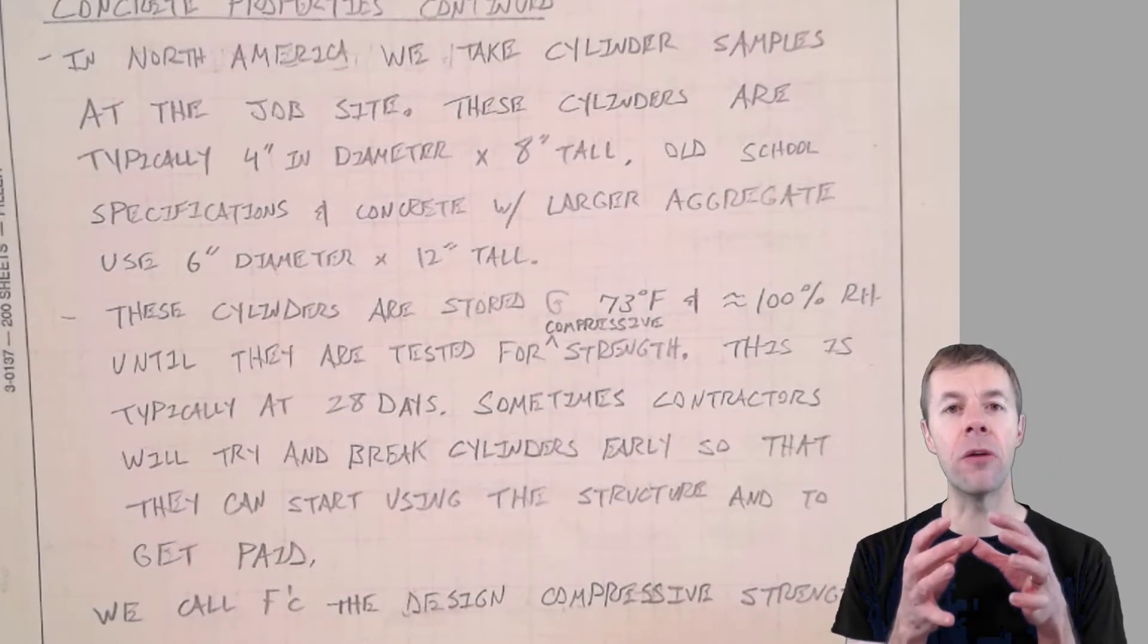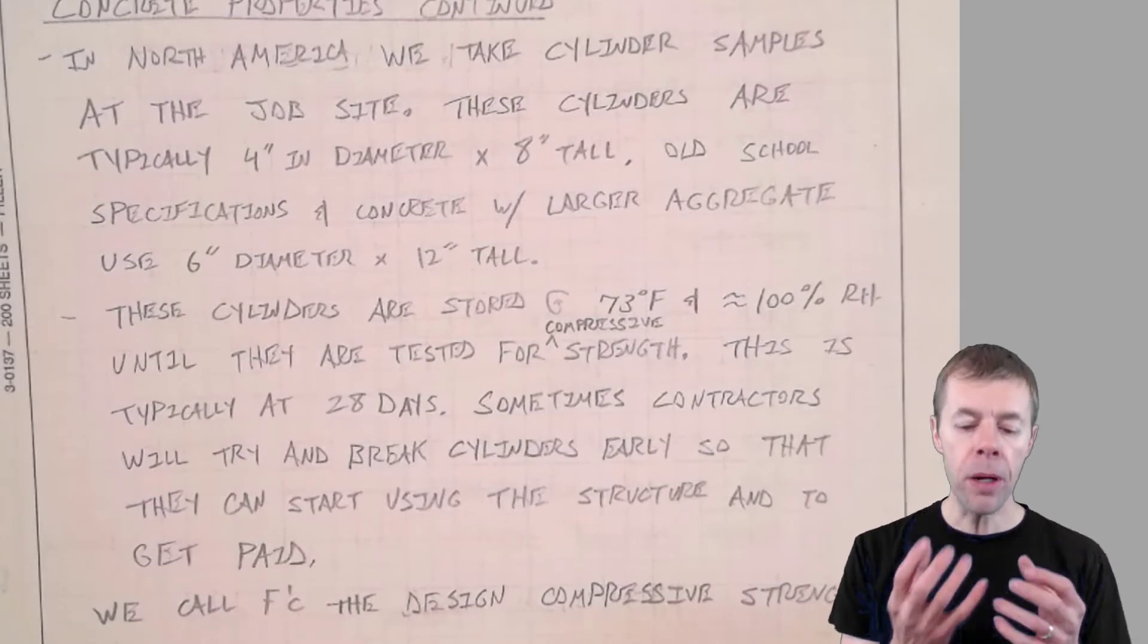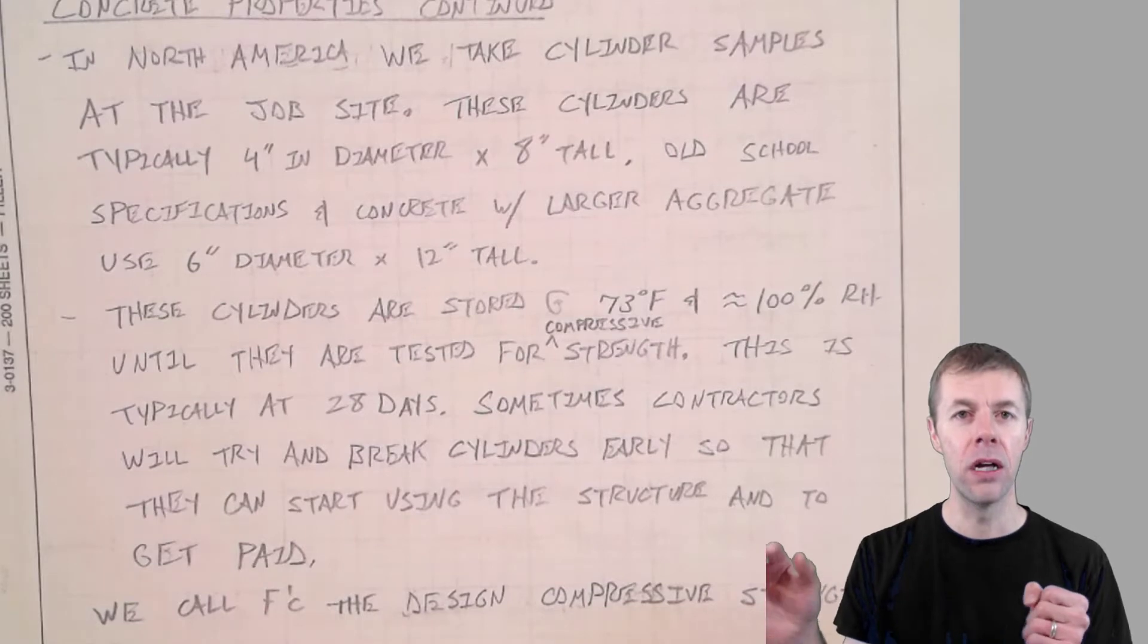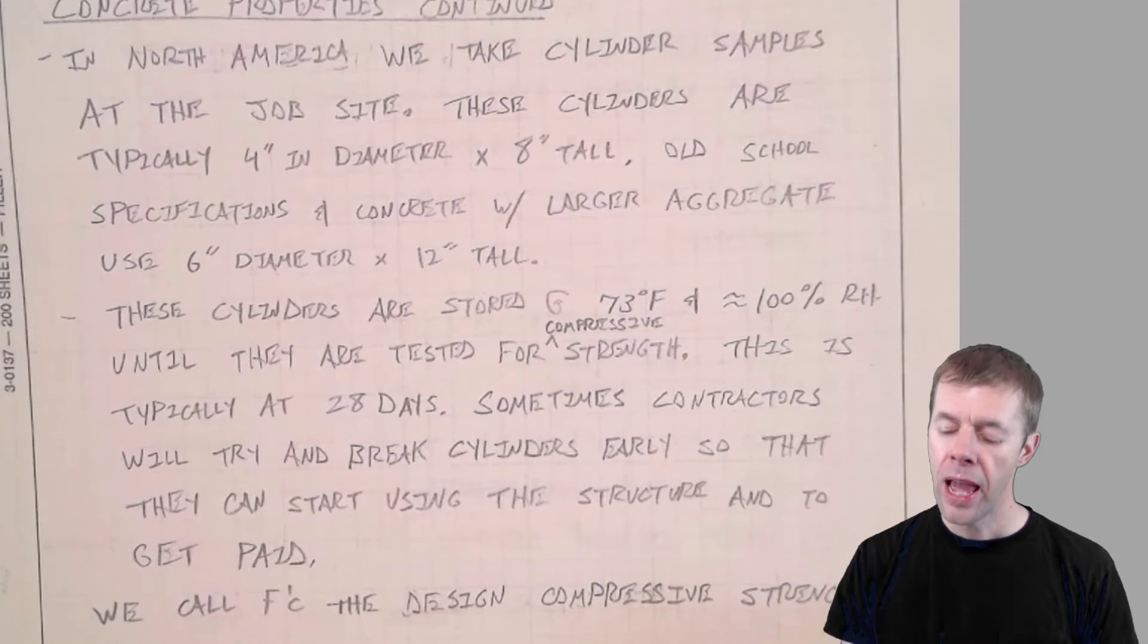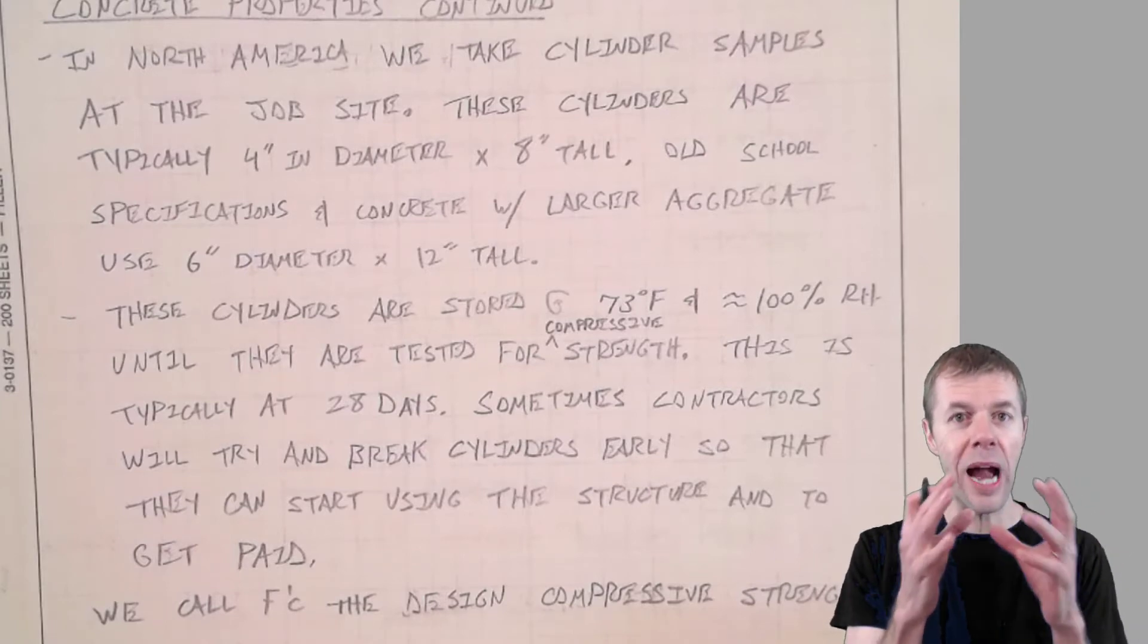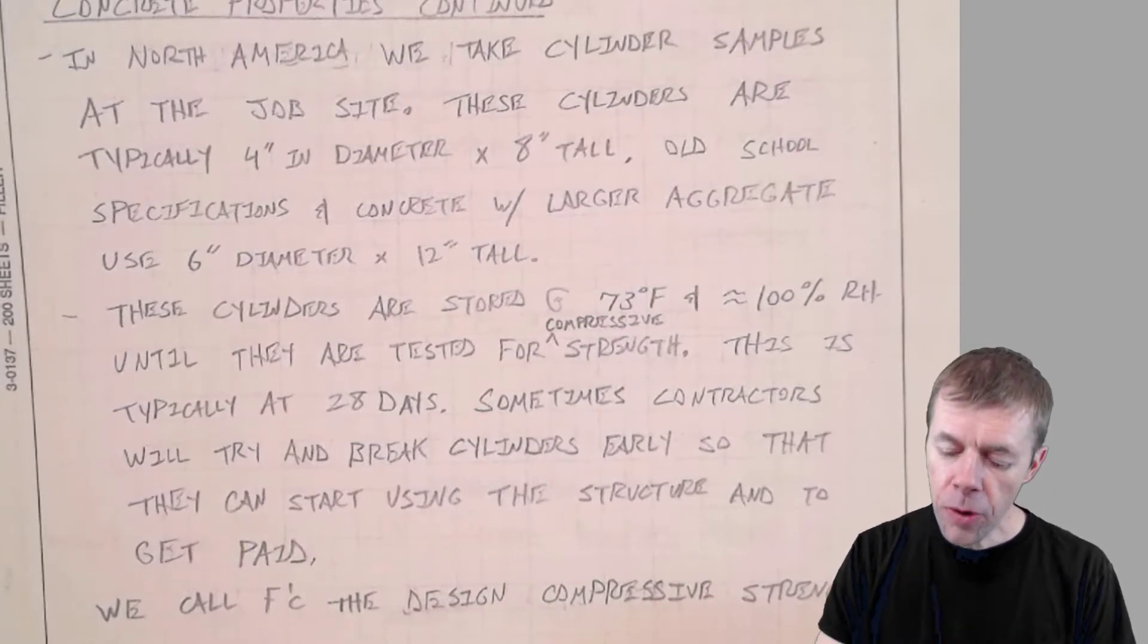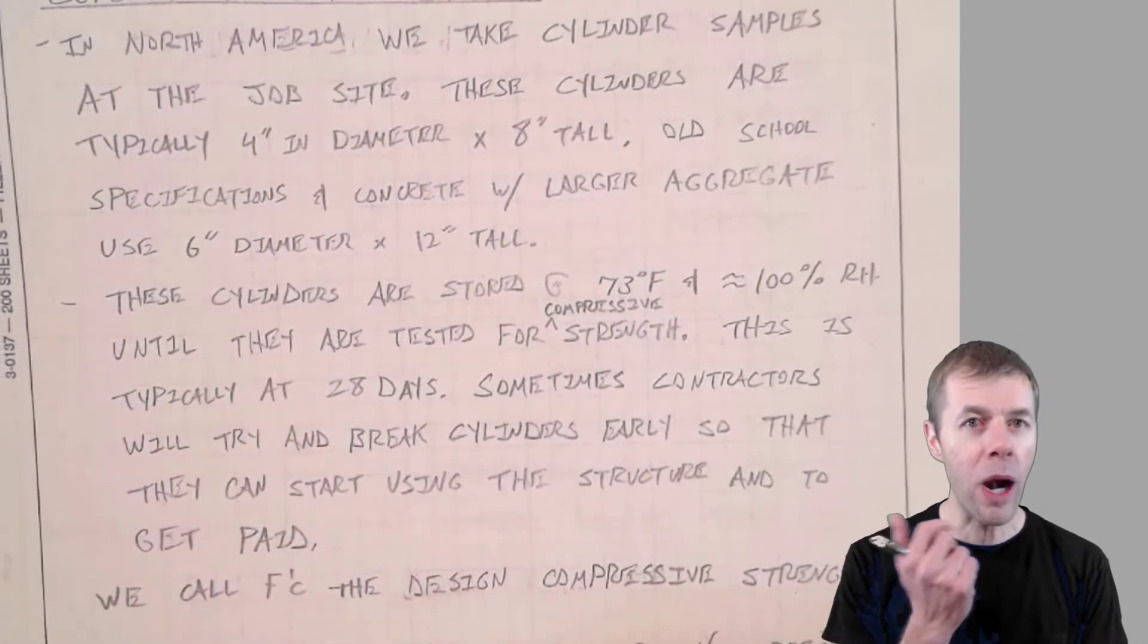Why am I taking this little bitty piece of concrete that's only next to my structure for one day, and then I put it in this standard environment. Yeah, I know it's not perfect. But what it does is it gives a standard way to compare, a standard way to test the material, to compare against different structures. And 73 degrees Fahrenheit, 100% relative humidity, is a nice environment to promote the hydration of concrete. That's the reaction inside of the concrete. And some contractors will actually try and break their cylinders early than 28 days. Why do they do that?